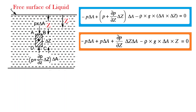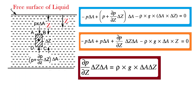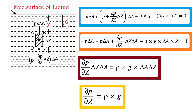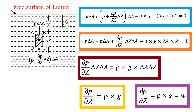The simplified form is: (del P / del z) into delta Z into delta A equals rho G into delta A into delta Z. Cancelling delta A into delta Z on both sides, the simplified form is del P / del z equals rho G, or rho G equals W, where W is the weight density of the fluid.